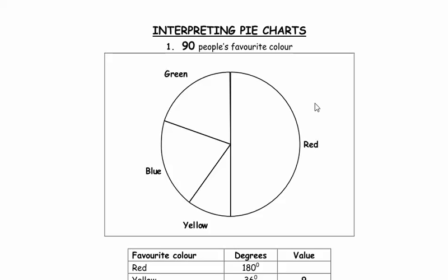Looking at this pie chart, even if we didn't know about the 90 people in the class, you could make certain conclusions from this pie chart. What would that be? Half the people like red. Okay, so half the people like red. Anything else you could say? There are four different colours. Red is the most popular.